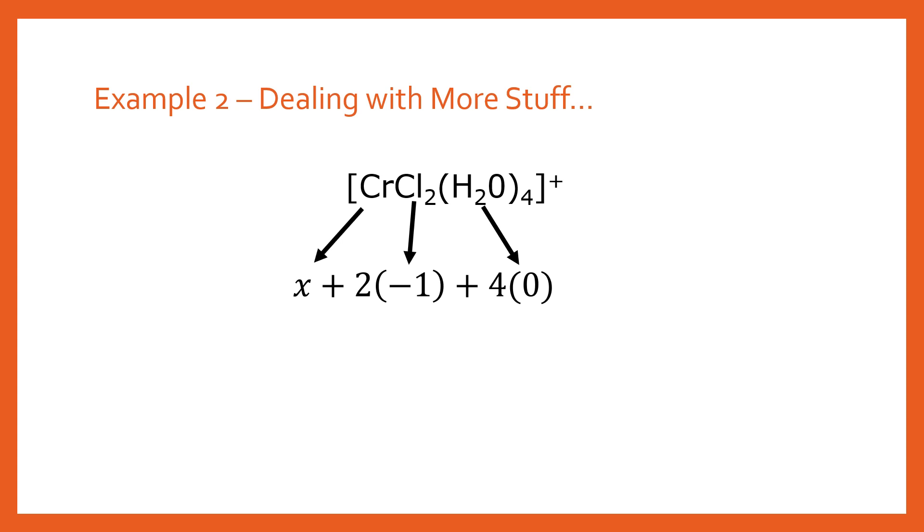So we've got four times zero and that's going to equal one. So we can simplify that to x minus two equals one because the four times zero is gone. Two times minus one is minus two. And we get this. Very simple to solve. Obviously that makes x plus three. So the chromium in this complex is in the oxidation state of three plus. And that's how we do that.